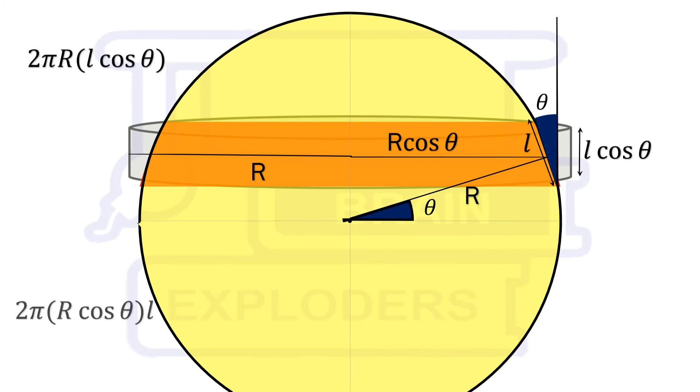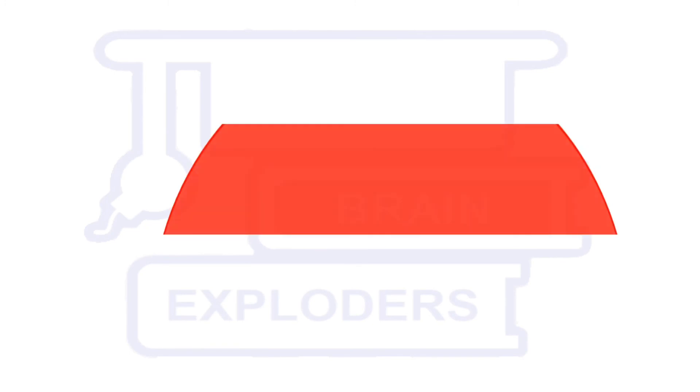Therefore, area of both the shapes becomes 2πrl cos theta. This is true for all values of theta, hence the surface area of spherical cap is also equal to the cylinder of same height and of radius equal to that sphere.